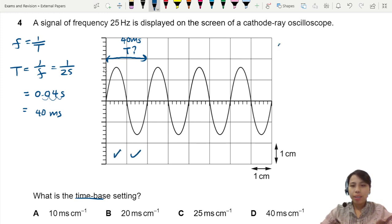So then we find the time-base setting: 40 milliseconds divided by 2 cm. Why divide? Why not multiply or do something else? Wait, we'll get there soon. So this is 20.